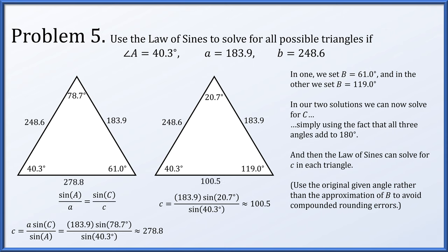Putting those sides into our triangles, we can check each one. On the left: the largest side is 278.8, across from the largest angle 78.7 — check. The smallest side is 183.9, across from the smallest angle 40.3 — check. On the right: the largest side is 248.6, across from the largest angle of 119 degrees — check. The smallest side is 100.5, across from the smallest angle 20.7 degrees — check. Both solutions are reasonable; nothing is obviously wrong.